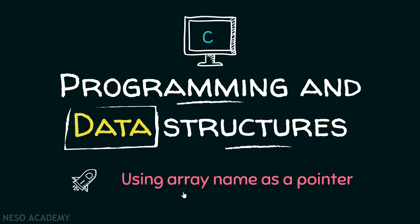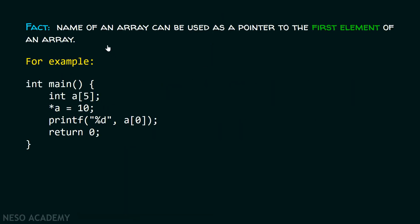In this presentation we will learn how to use array name as a pointer. There is one important fact for us to understand: the name of an array can be used as a pointer to the first element of an array. We can use the name of the array as a pointer because it represents the base address of the first element of the array. Here is an example to demonstrate this fact.